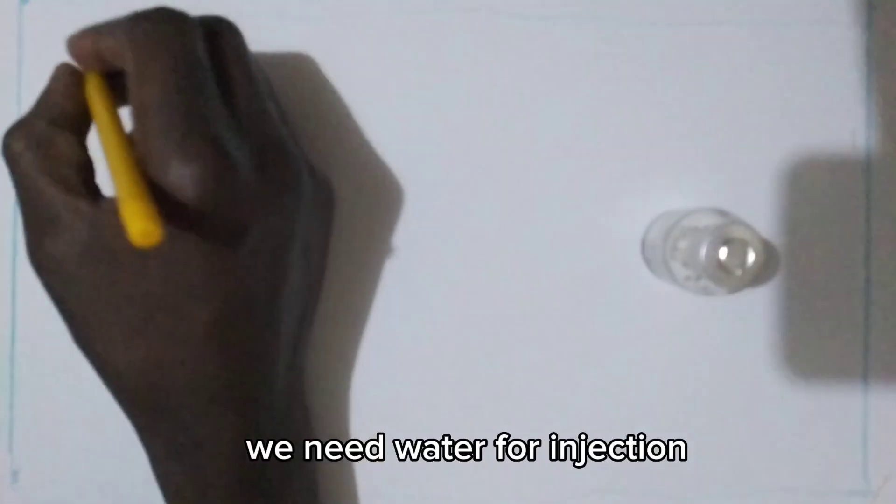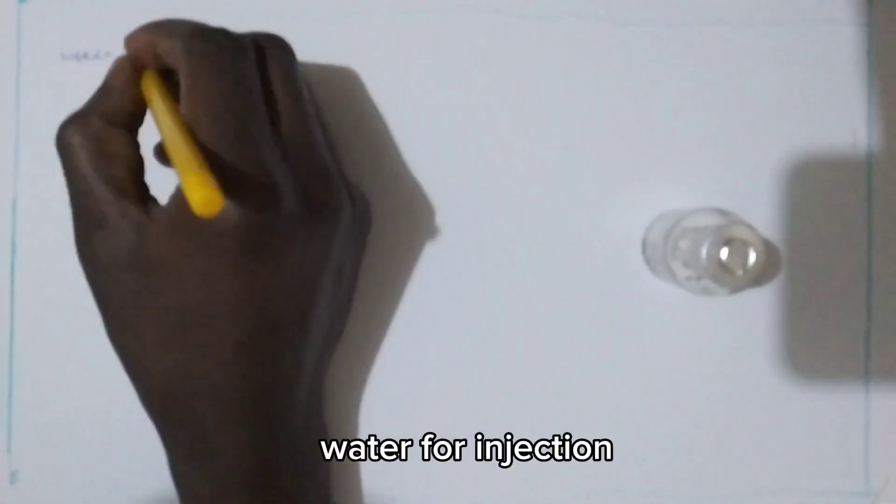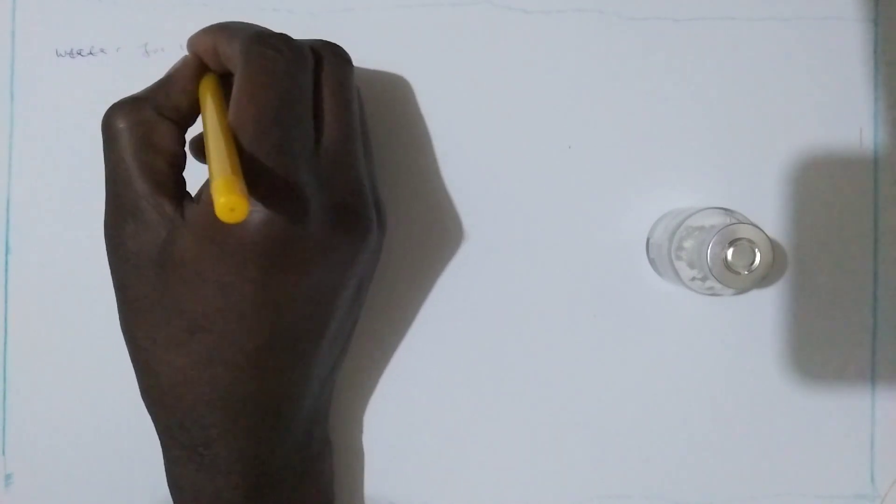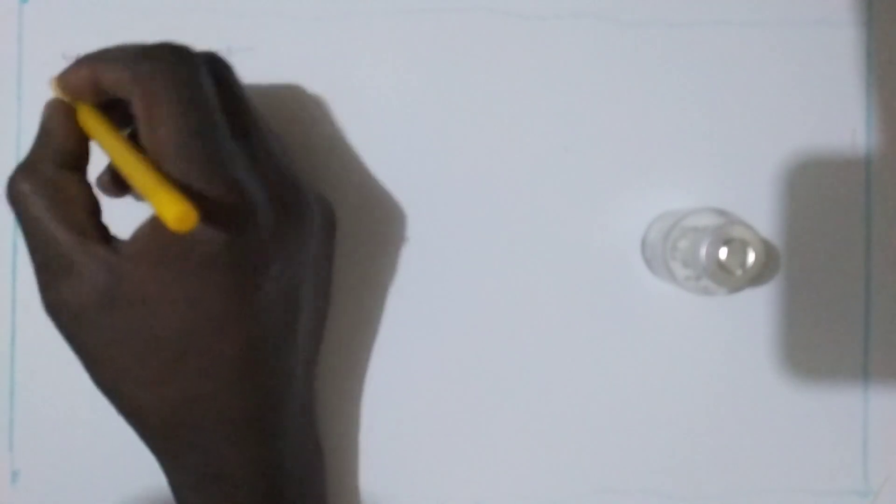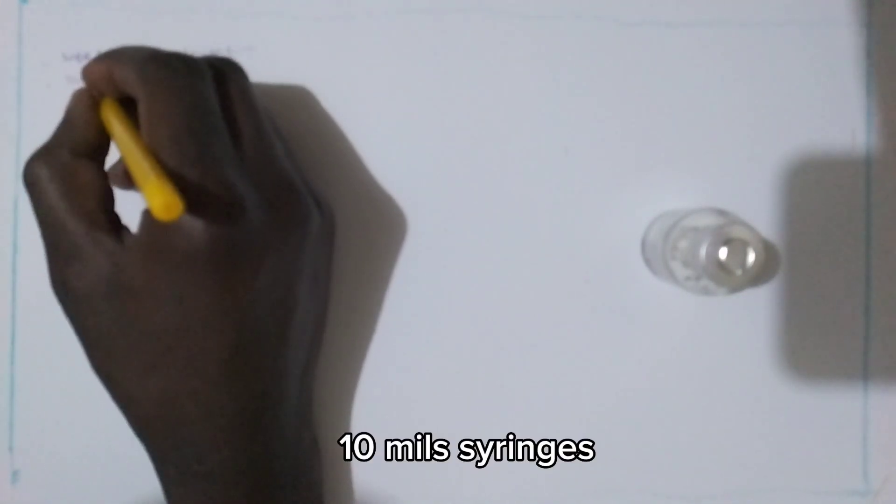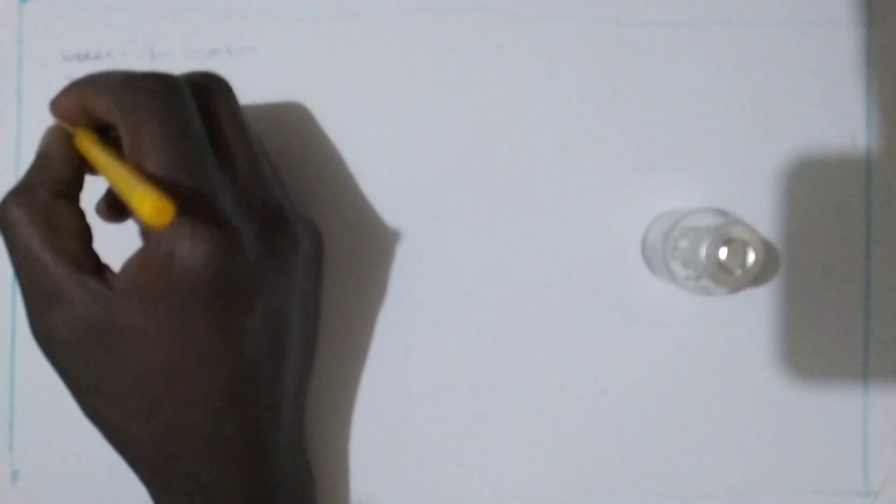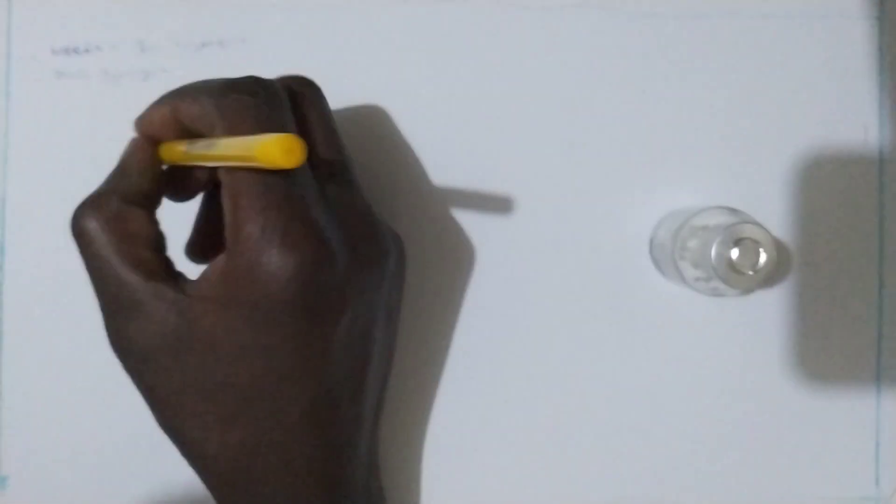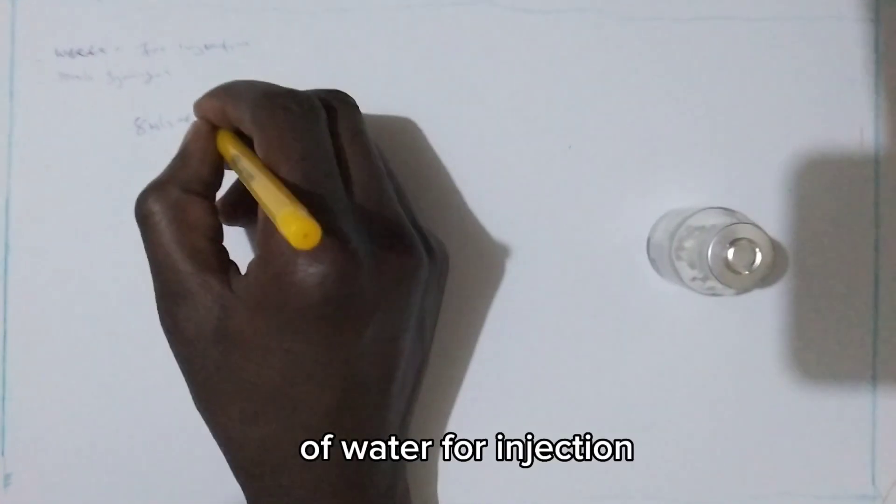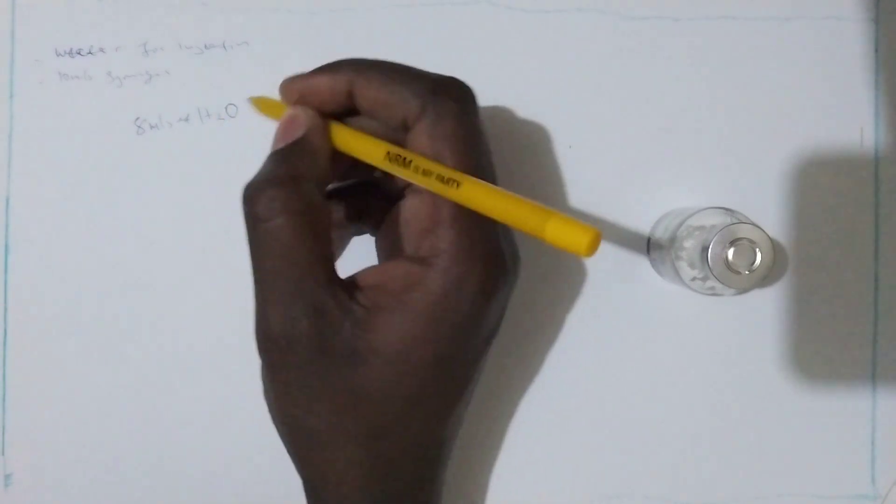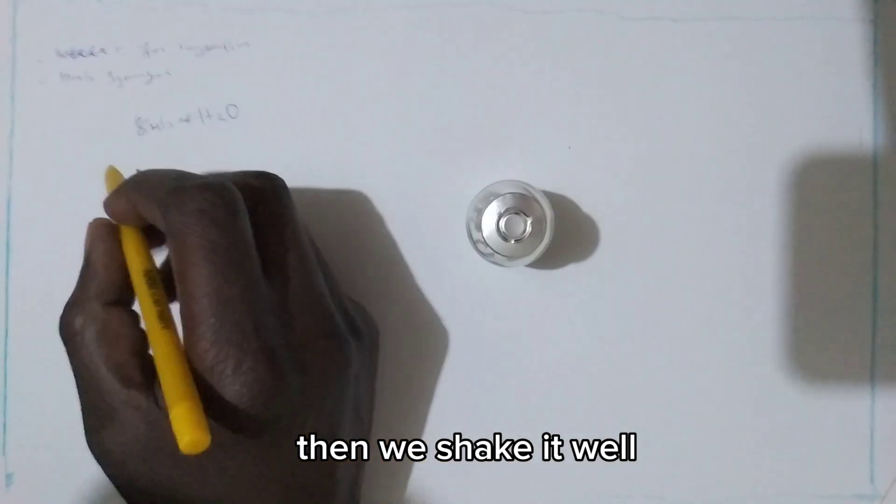Here we need water for injection and we need 10 mL syringes. We dilute with 8 mL of water for injection and we put it here. Then we shake it well.